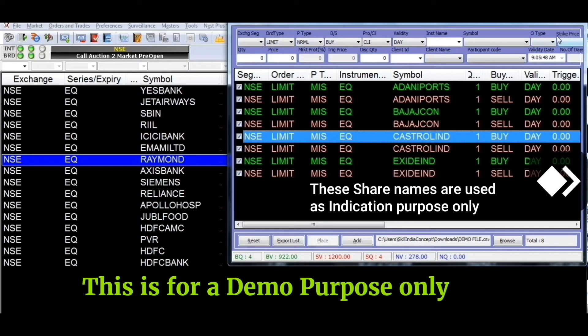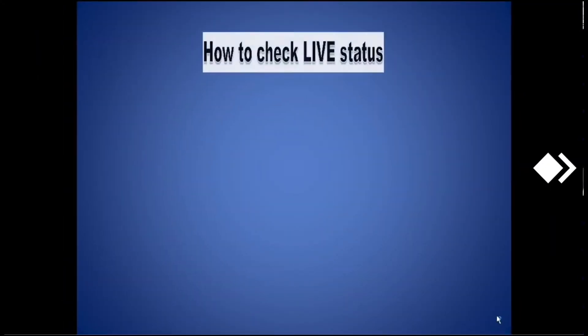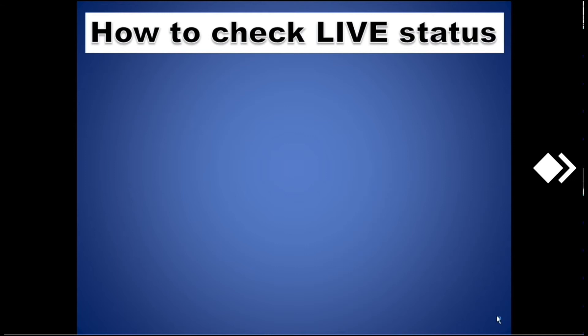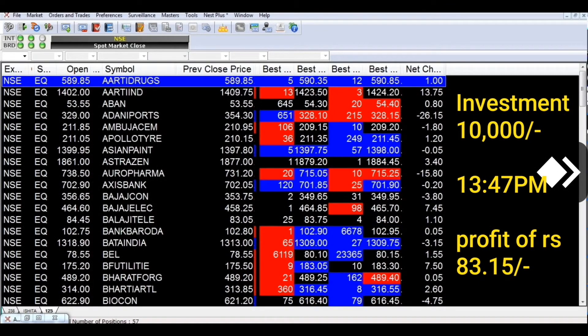Click karne ke baad yeh link disable ho jata hai — yeh ek hi baar kaam karta hai. Uske baad aap is window ko yahan se band kar denge. After 9:15, you can check the live status when the market is open. To check live status: press function key F11 from your keyboard. A window will appear — tick on the Enable button which is placed at the top middle of the screen, then click on Get Position link, then look at the bottom middle. MTM is your profit and loss.